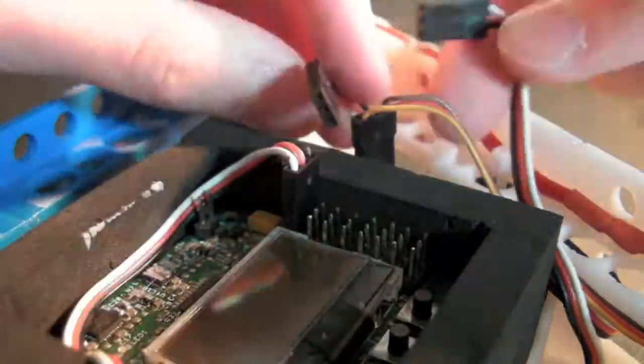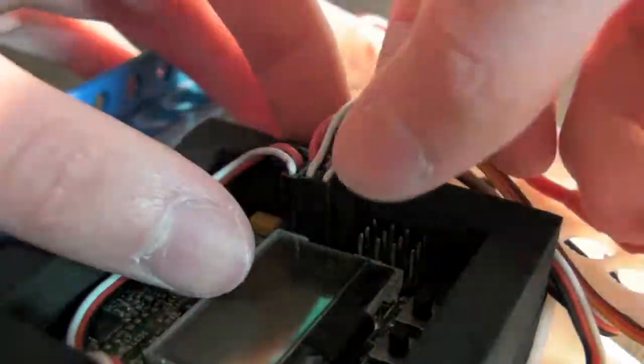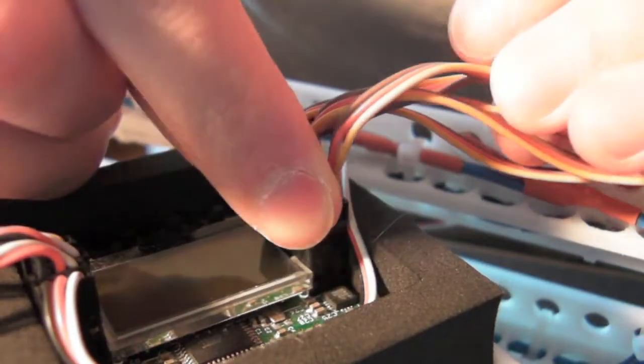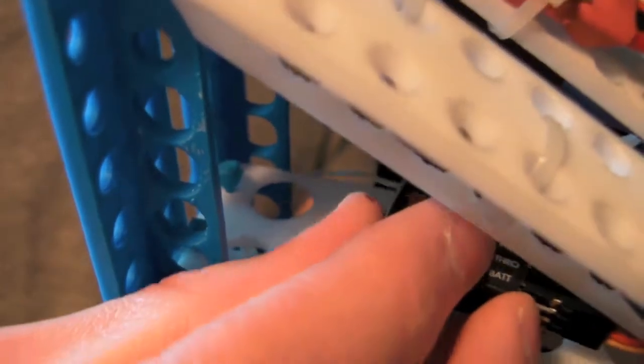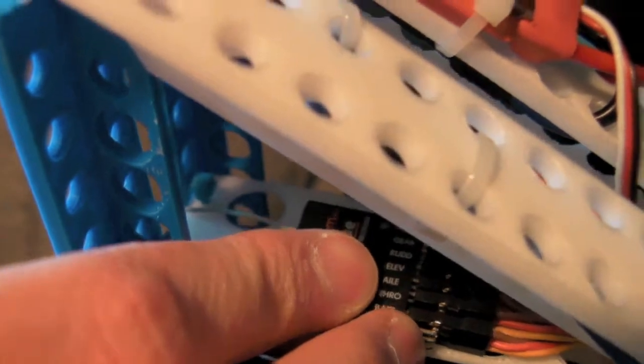And after that, I plugged in all the wires from the ESCs, the servo, and the receiver. And then securing the receiver in place with more double-sided tape.